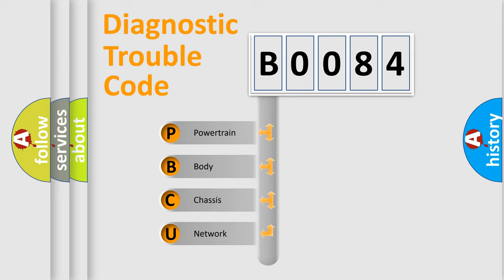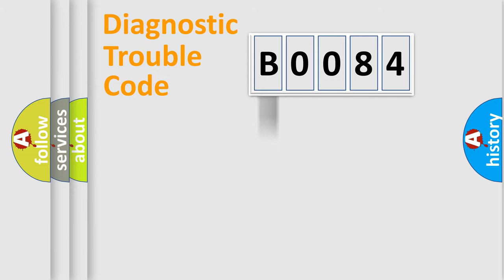We divide the electric system of the automobile into four basic units: Powertrain, Body, Chassis, and Network.